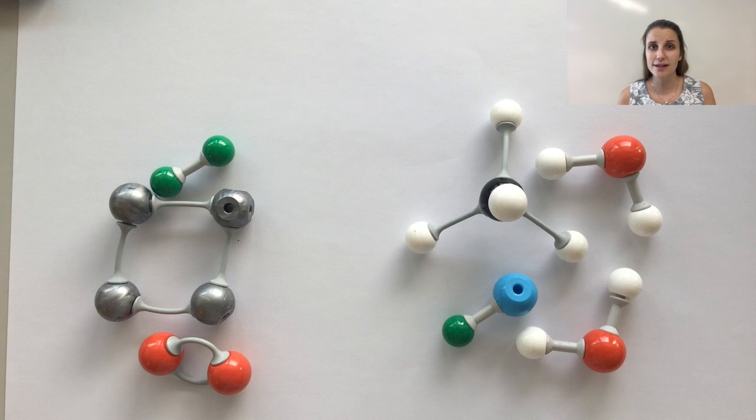On the right hand side, I've got a mixture of compounds. Each one of these species contains more than one colored ball, and that means more than one type of atom, so that makes it a compound. Because all of them are different, they have to be a mixture of compounds.